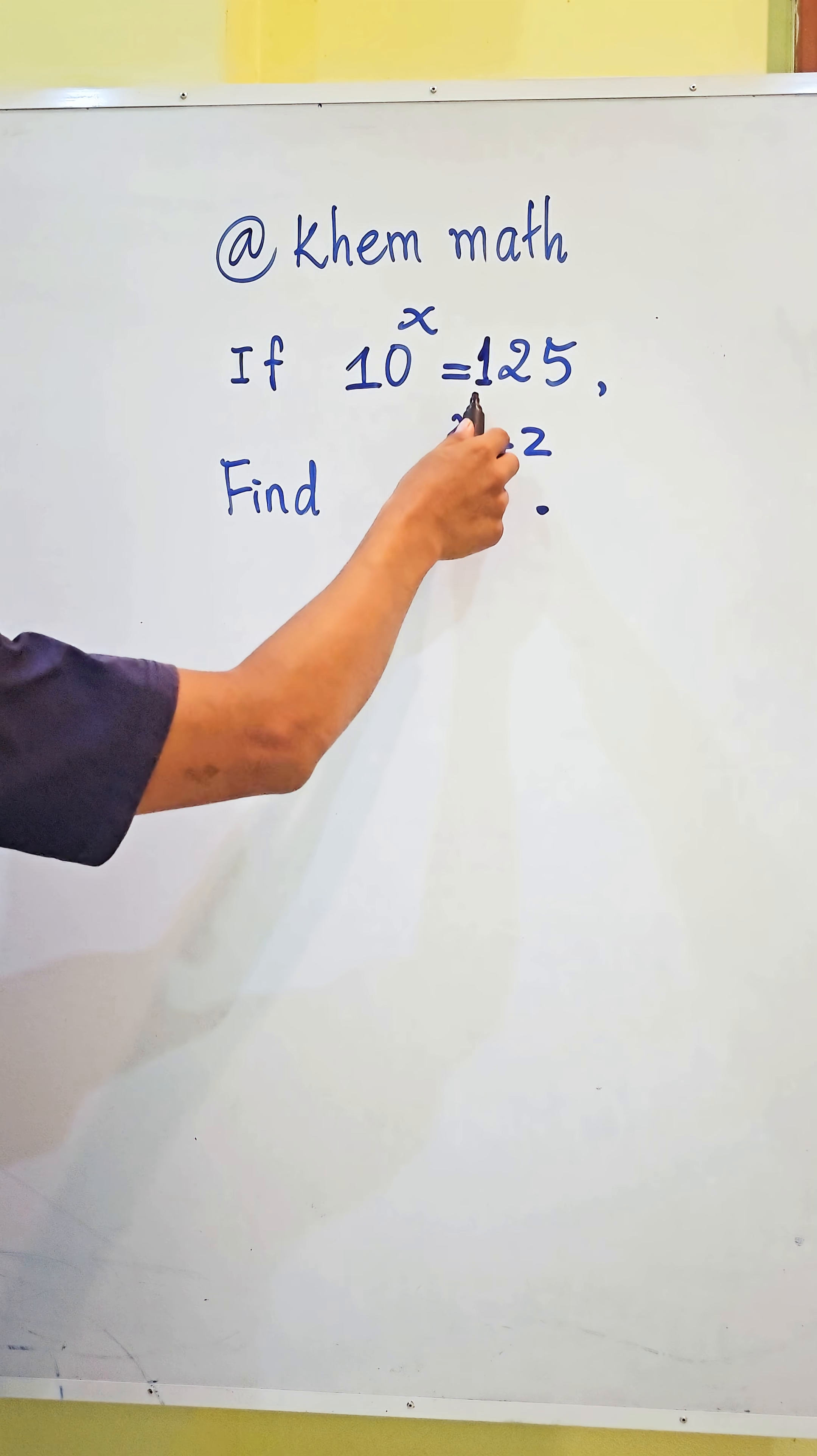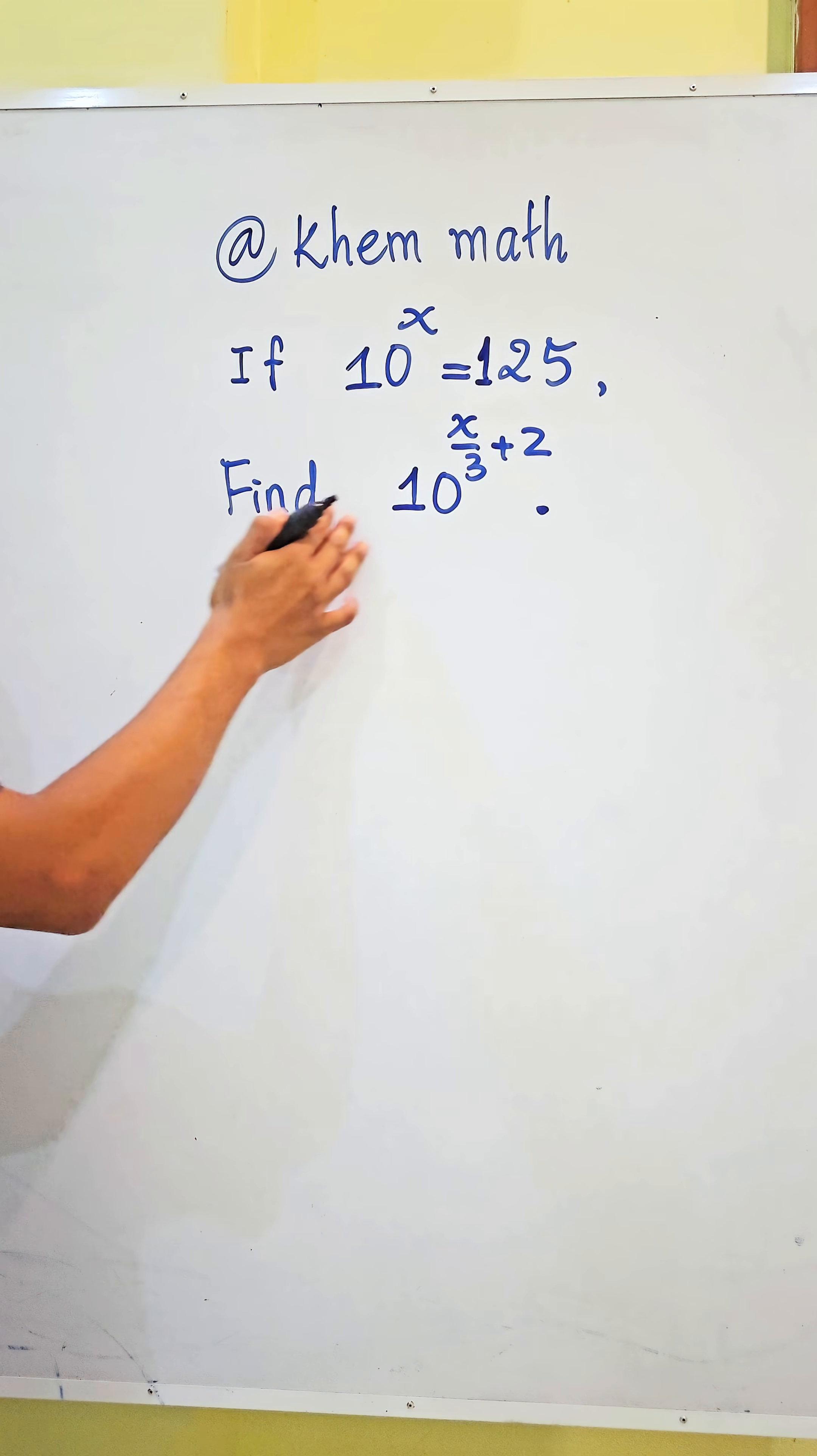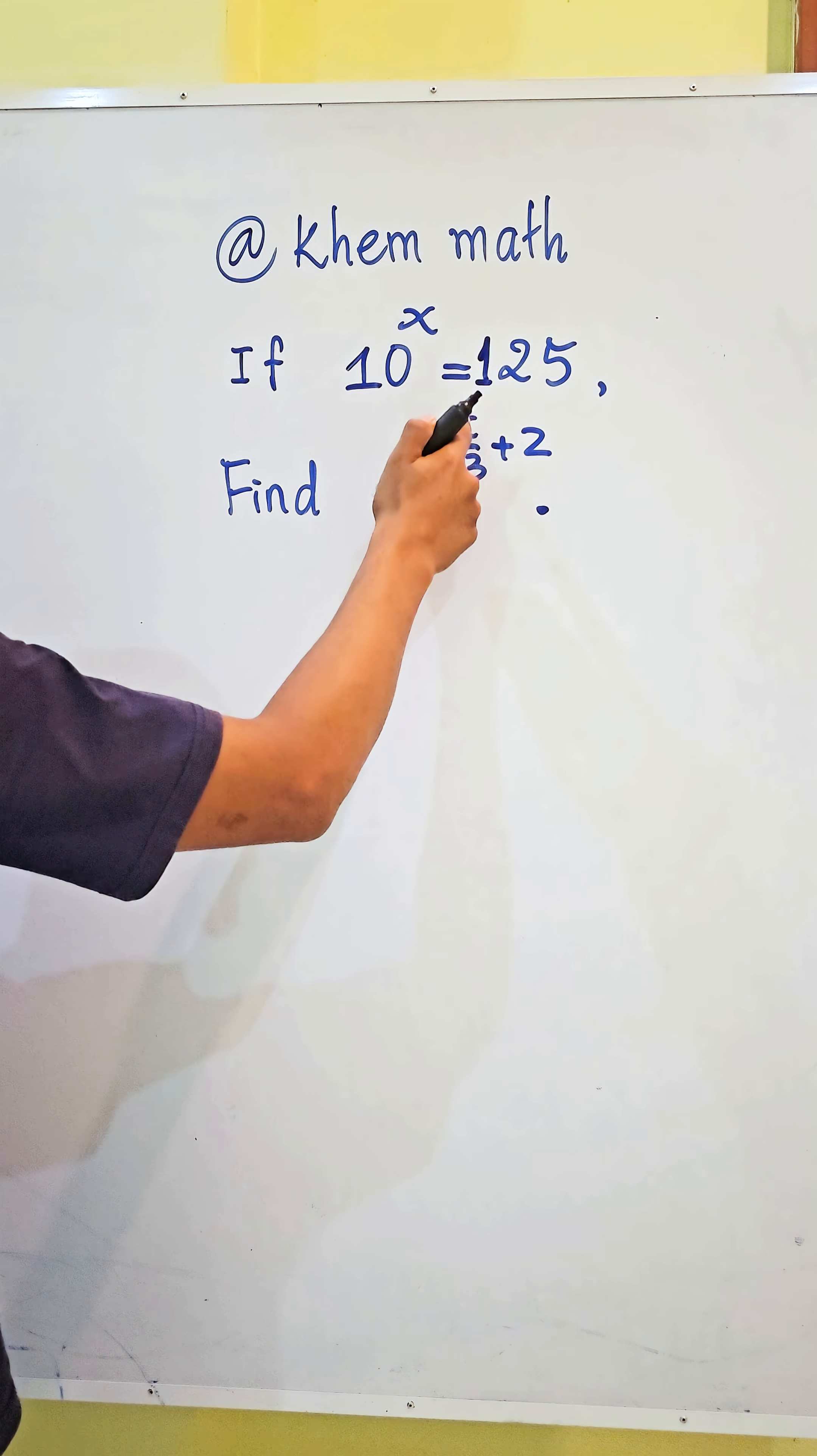If 10 power h is equal to 125, find the value of expression 10 power h divided by 3 plus 2.